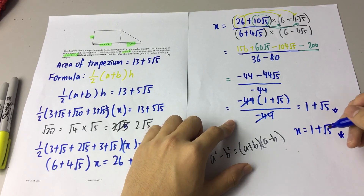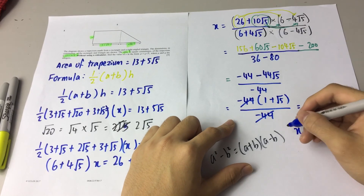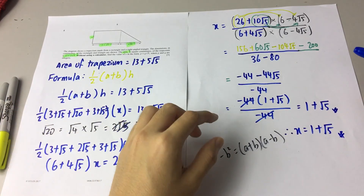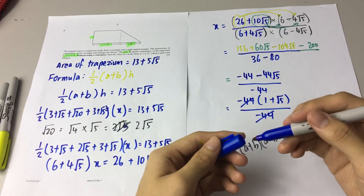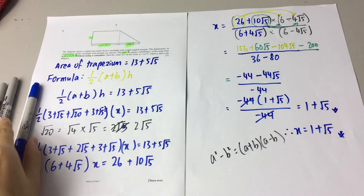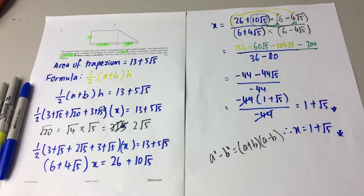So x equals 1 plus root 5. This is the final answer. This is the end of the past year review. Thank you.